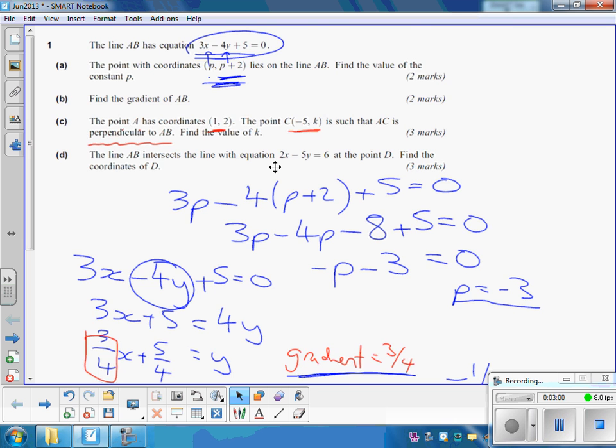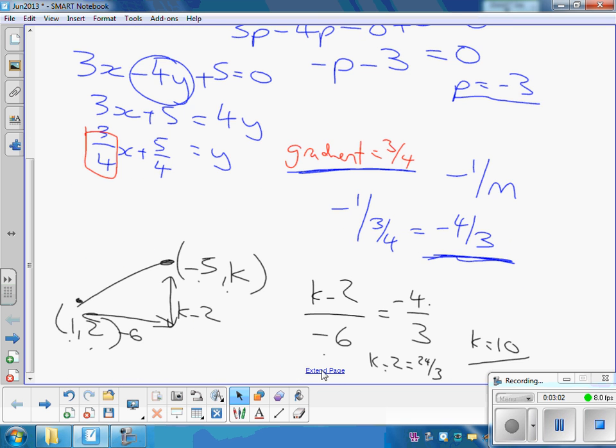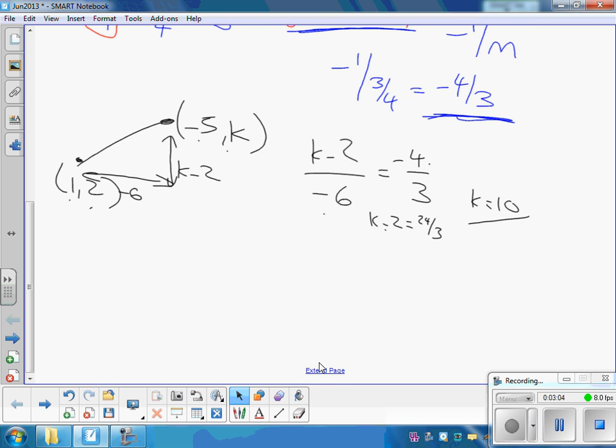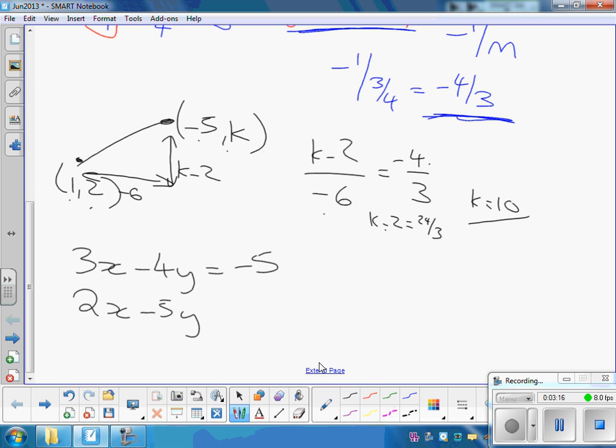So we need to find out when these two things are equal. That just means solving the simultaneous equation that you've got there. We've got 3x minus 4y equals minus 5. And the other one, we've got 2x minus 5y equals 6. Just rearranging those.